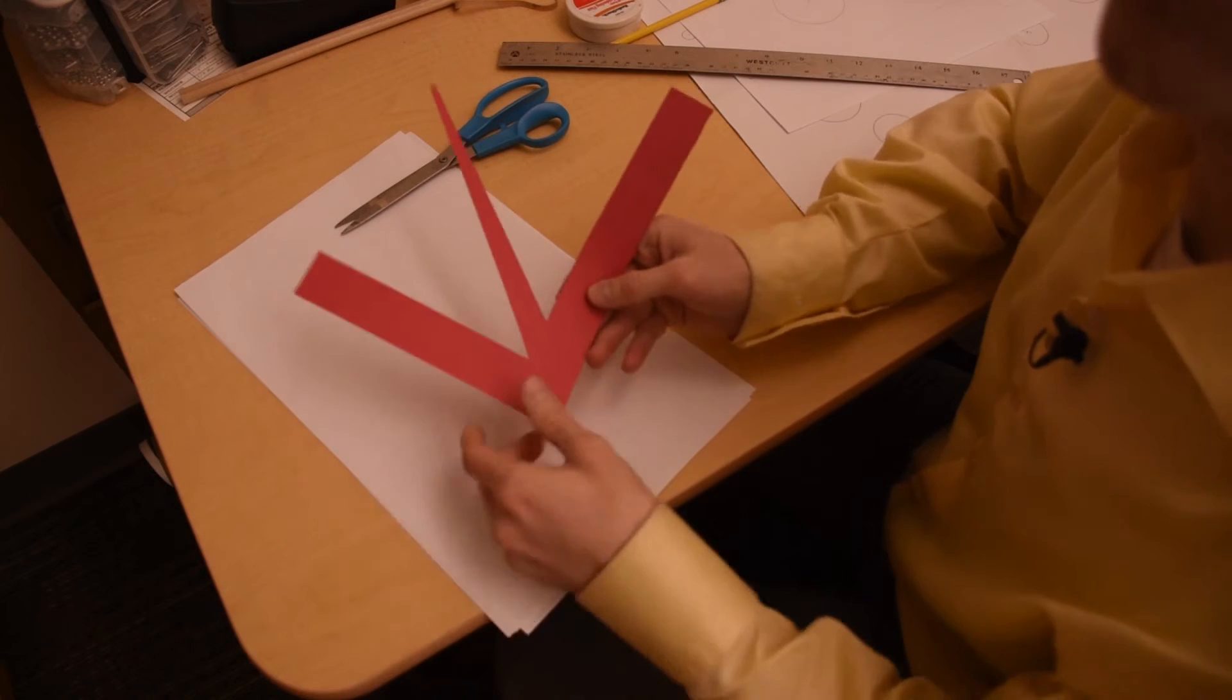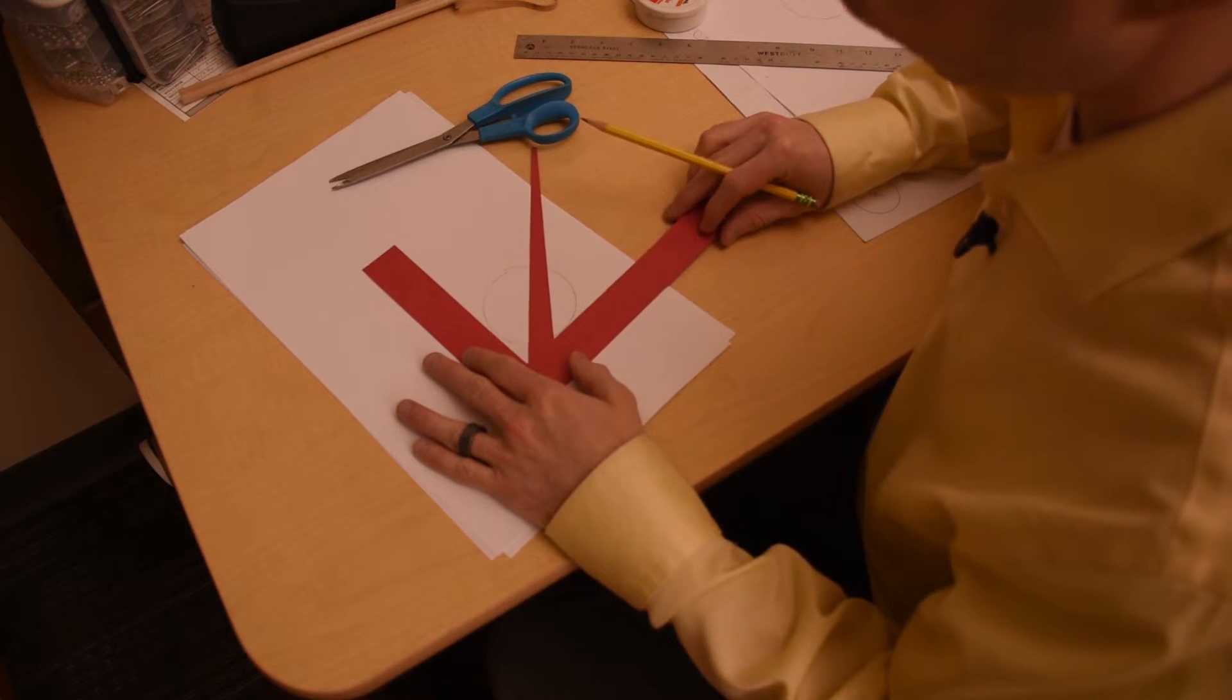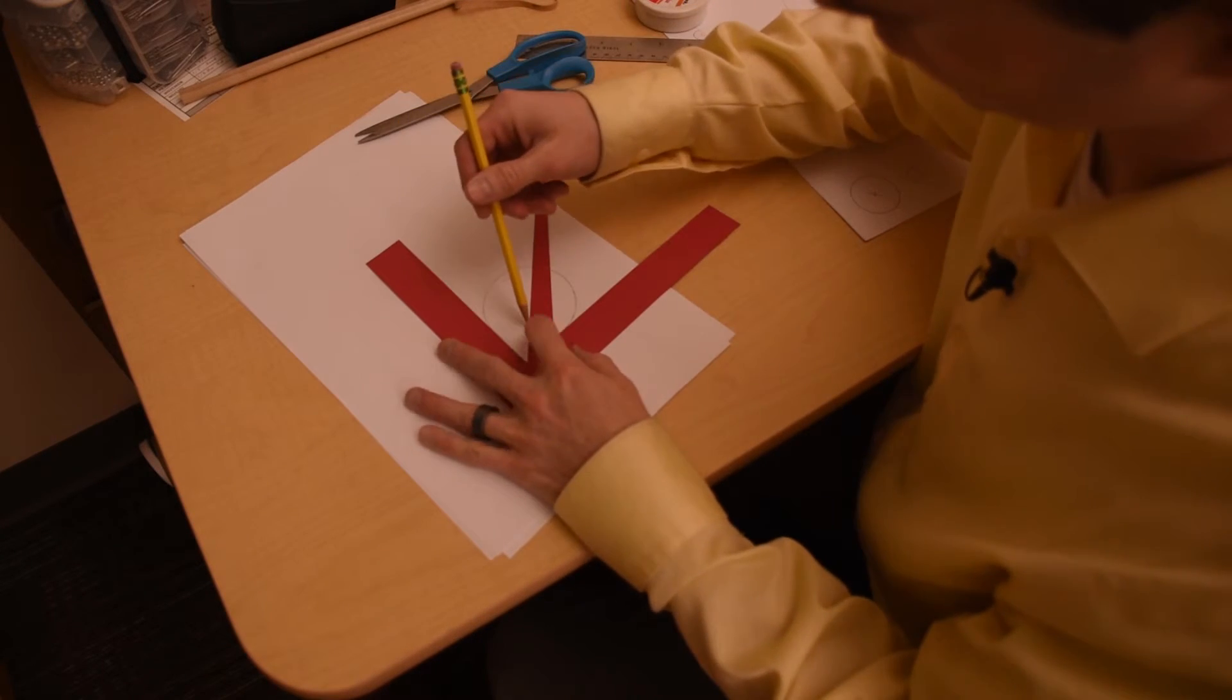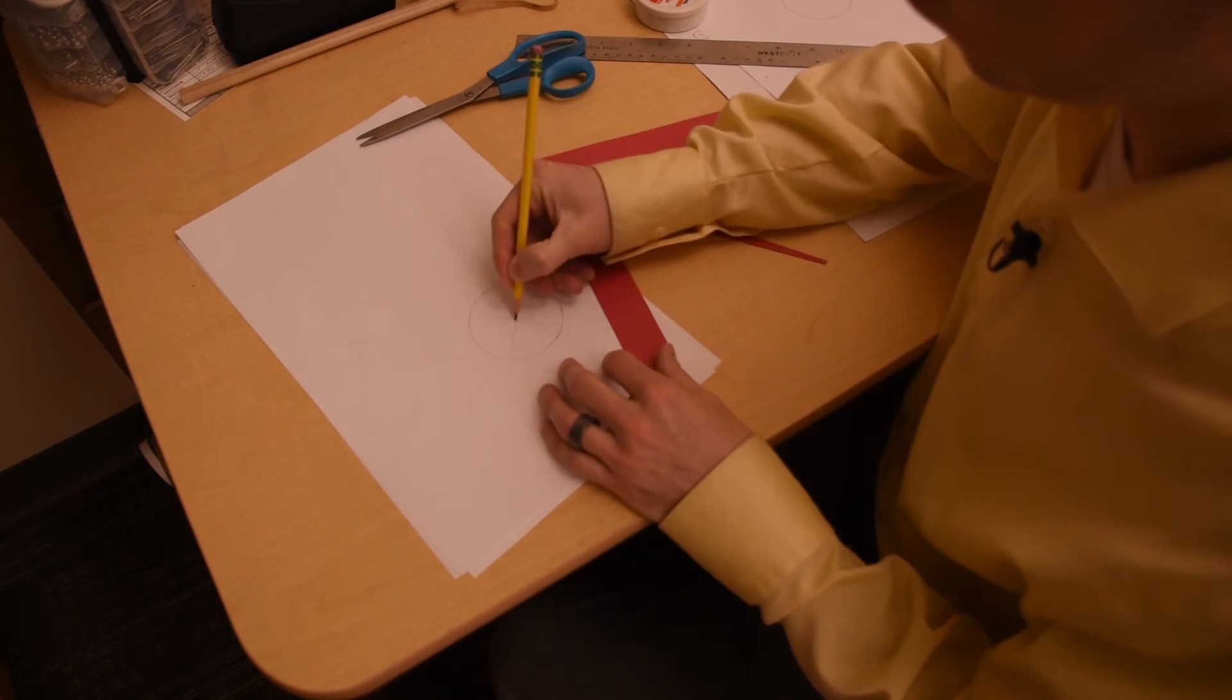And just like that, there you have it, a circle finder. You abut each side against the circle, draw a line here down the middle, do the same thing on this side, and X marks the spot.